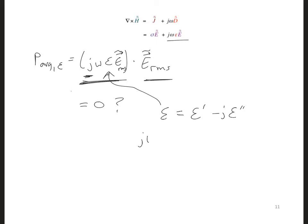In this case, j omega epsilon E is now j omega epsilon prime minus j epsilon double prime E. If we write this out, the first part will be with the real epsilon prime, and this is 90 degrees out of phase with E, so no heating.